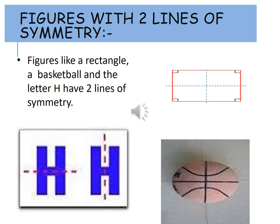Figures with two lines of symmetry: figures like a rectangle, basketball, and the letter H have two lines of symmetry.